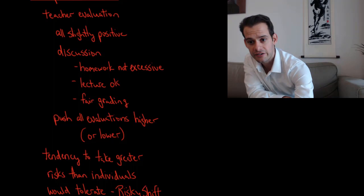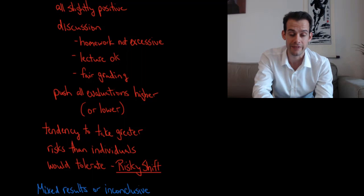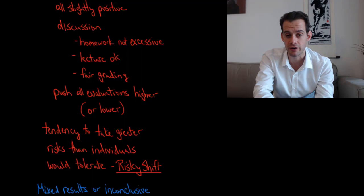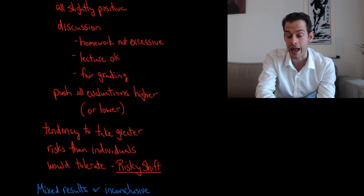Now, we also see that groups have a tendency to take larger risks than the individuals in those groups would be willing to tolerate. This is a type of group polarization known as risky shift. So if you were to ask individuals in a group, for instance, what probability of failure would they be willing to accept for some new venture?